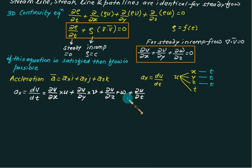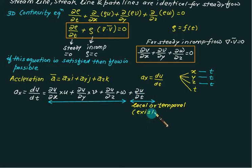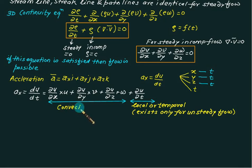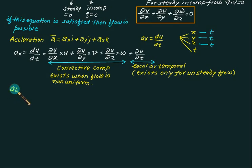Using the same technique, you can develop the equation for ay by replacing u with v and repeating the same sequence. Of these two parts of acceleration, ∂u/∂t is called local or temporal acceleration, which is only possible when u is a function of time — it exists only for unsteady flow. The first three terms are the convective component of acceleration, which exist only for non-uniform flow. For uniform flow all convective terms are zero; for steady flow ∂u/∂t is also zero.